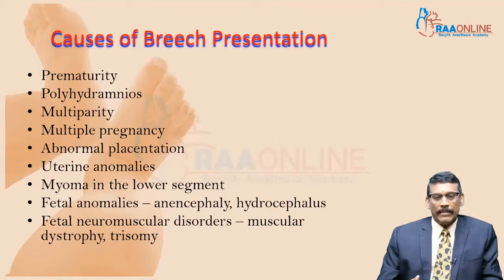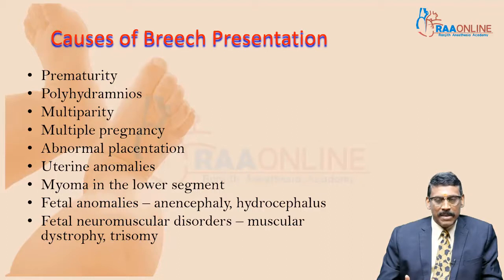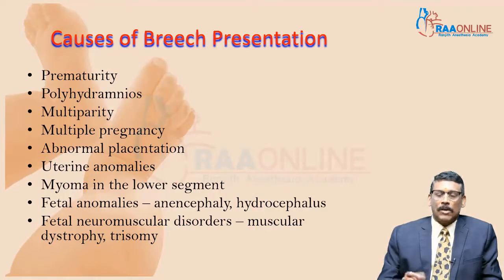Abnormal placentation and uterine anomalies are not very common causes. A myoma sitting in the lower uterine segment can prevent the head from coming down. Fetal anomalies like anencephaly or hydrocephalus, where the head is bigger, cause it to occupy the fundus. Rare conditions like fetal neuromuscular disorders, muscular dystrophy, and trisomy can also cause breech presentation.